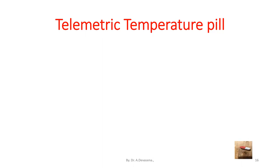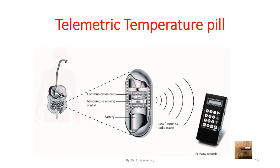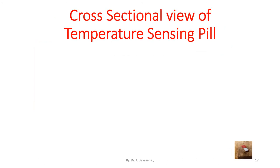The telemetric temperature pill is represented here. The cross-sectional view of the stomach shows a telemetric temperature pill. The overview of the telemetric temperature pill comprises communication coils, a temperature sensing crystal, and a battery. The radio pill sends information to an external recorder in the form of low frequency radio waves.